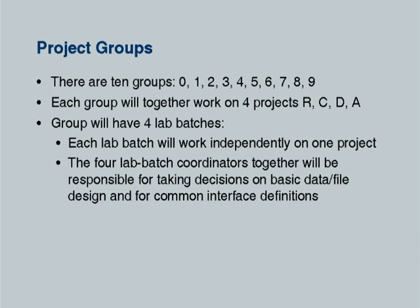To recapitulate: there are ten groups numbered 0 through 9. Two of these groups assemble every day, which is how our lab batches are formed. Each group will together work on four projects — R, C, D, and A — which have been already described. Each group will have four lab batches, and one of these projects has to be assigned to a lab batch. I presume this assignment has already been done; if not, it should be completed preferably by tonight.